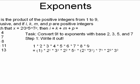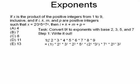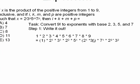So how do you do that? You write it out first. You write it out and then you convert each factor to base 2, 3, 5, and 7. You have 1, times 2 to the 1st, times 3 to the 1st, times 4 — which is 2 to the 2nd — times 5 to the 1st, times 6 — which is 2 times 3, both to the 1st power — times 7 to the 1st, times 8 — which is 2 to the 3rd — times 9, which is 3 to the 2nd.